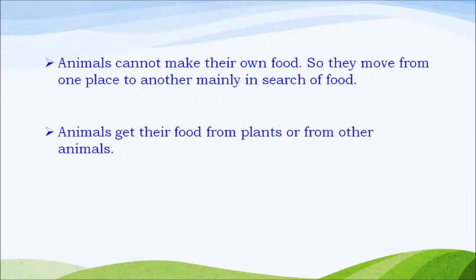Animals cannot make their own food. So they move from one place to another mainly in search of food. Animals get their food from plants or from other animals.